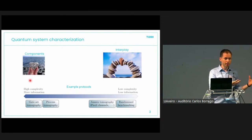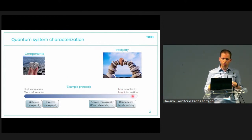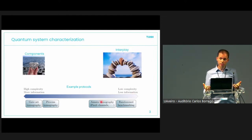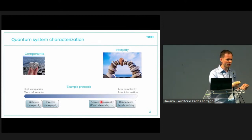There are lots of protocols — the most popular ones are probably gate set tomography and randomized benchmarking. Either you're on the side of having high complexity and gaining a lot of information but can only apply it to small subsystems, like with gate set tomography, or you can be on the other extreme end with lower complexity but able to learn something about the interplay of different components, like with randomized benchmarking or Pauli channel tomography.